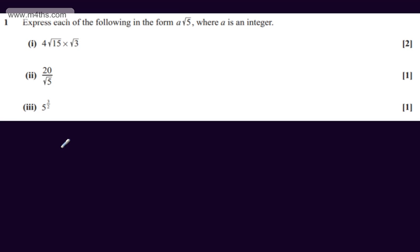This is question number 1. We're asked to express each of the following in the form A root 5, where A is an integer. In the first part for two marks, we have 4 root 15 multiplied by root 3.